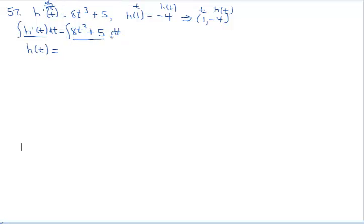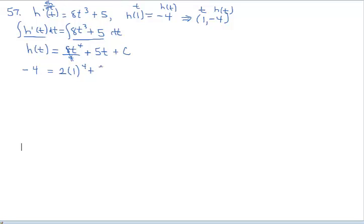Here's our integrand on the right side. Once we integrate, we're going to lose those symbols. So I've got 8t — I'm going to increase the exponent by 1 to get t to the 4th and divide by 4. Plus, 5's antiderivative would be 5t. Then I have the constant of integration. This is the general solution. Let's find the specific solution using the ordered pair: h of t is replaced with negative 4 when t is 1. Cleaning up, that's 2 times 1 plus 5, giving negative 4 equals 7, so the constant of integration is negative 11.